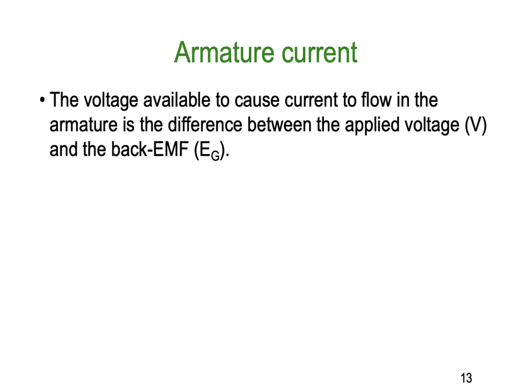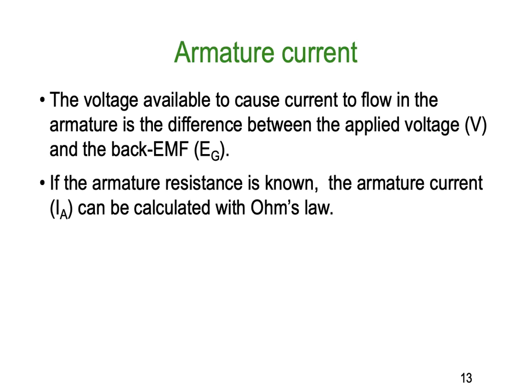Regarding armature current: the voltage that causes current to flow in the armature is the difference between the applied voltage V and the back EMF E_G. If the armature resistance is known, the armature current I_A can be calculated using Ohm's law: I_A = (V − E_G) / R_A. This is simply DC Ohm's law giving us the voltage inside the armature subtracted from the applied voltage.